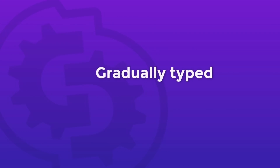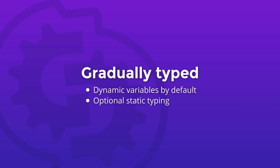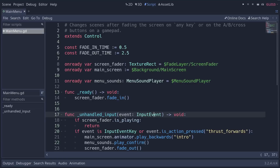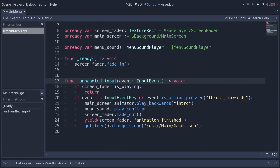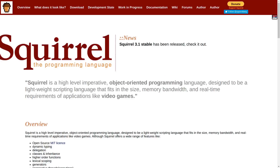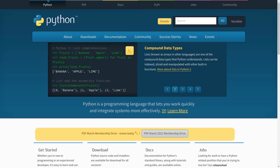GDScript is a gradually typed language. This means that variables have dynamic types by default, but you can also use type hints for strong type checks, which helps you prevent errors. The language looks a bit like Python at a glance, as you structure your code using indentations — tabs or spaces at the start of code lines. But GDScript really doesn't work the same way in practice. It's inspired by multiple languages including Squirrel, Lua, and Python, but built specifically for game developers.